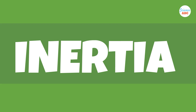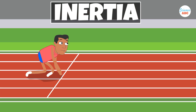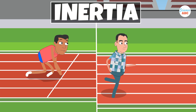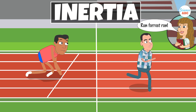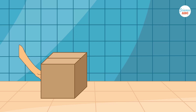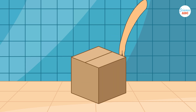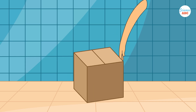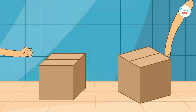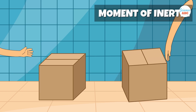You've probably heard of inertia — the idea that objects at rest stay at rest, and objects in motion stay in motion. Regular inertia is about linear motion, like pushing a box across the floor. Moment of inertia is about circular motion, like spinning the same box around. Both depend on mass, but moment of inertia also cares about where the mass is.